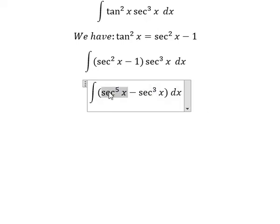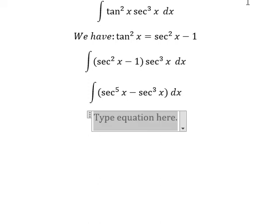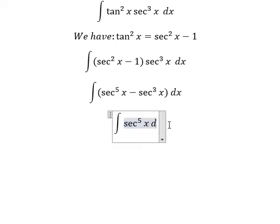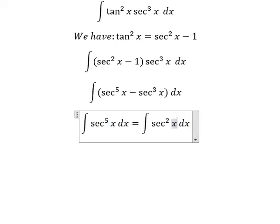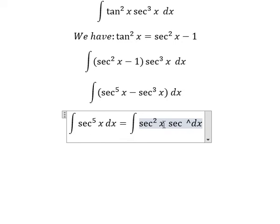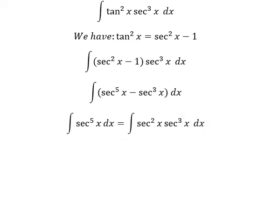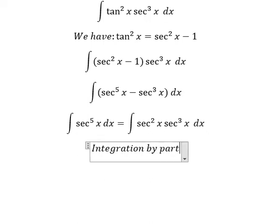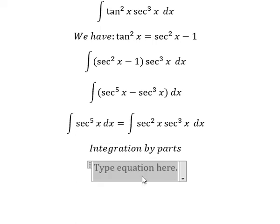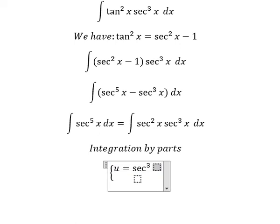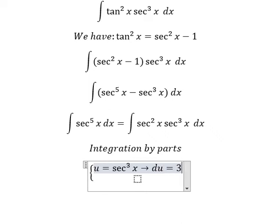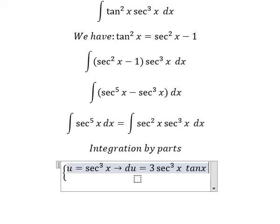Now I will go to the first term. We know that we can write it as secant x multiplied by secant³x. So I need to use integration by parts. I will put u equals secant x to the power of 3. If I take the first derivative of both sides, we have du equals 3 secant³x · tan x dx.